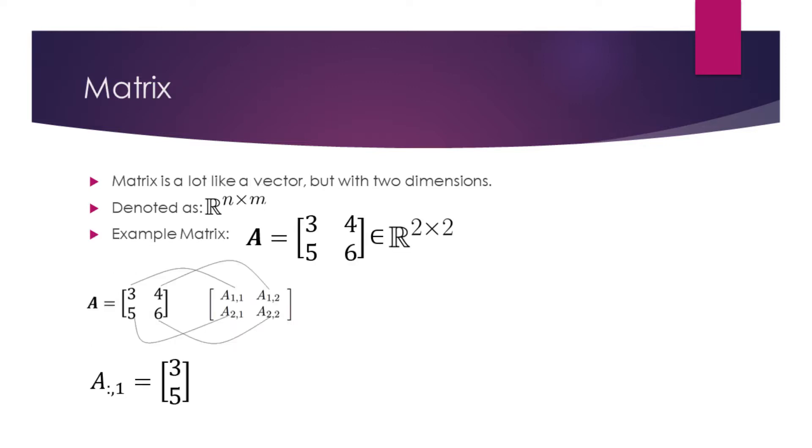A matrix is a two-dimensional array of numbers. A real-valued matrix with n rows and m columns is denoted as r superscript n times m. On the slide you can see the example of a 2 by 2 matrix, A.